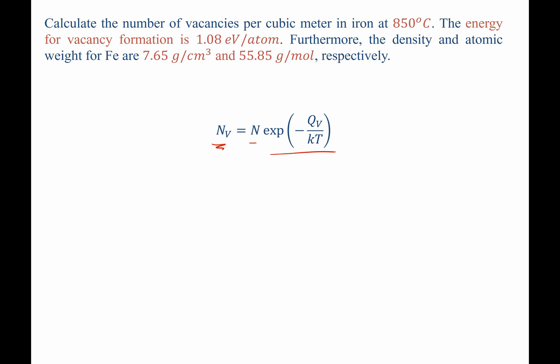Now since we're given the energy of formation, and we know what Boltzmann constant and the temperature are, everything inside of our exponential term is known. This means the only thing preventing us from calculating N sub V directly is knowing what N is.